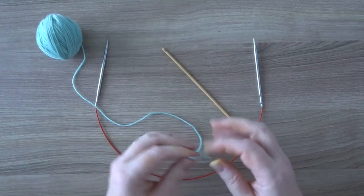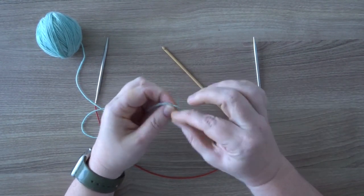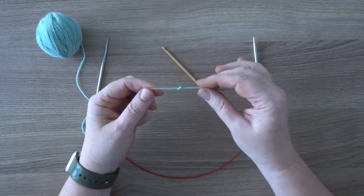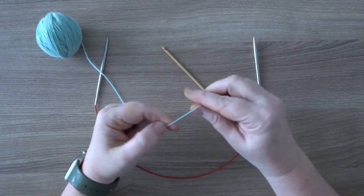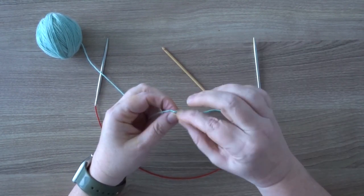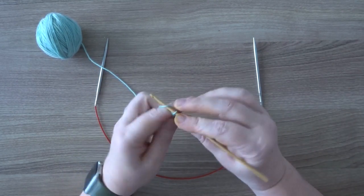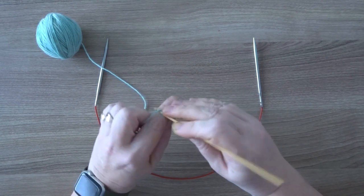You take your waste yarn and you tie a knot at the beginning. It's not so much that I can see the knot but I can feel where it is, and that's important when you are going to take your provisional cast-on out. Then you make a slip knot and put it on your crochet hook, and you chain stitch a few stitches.